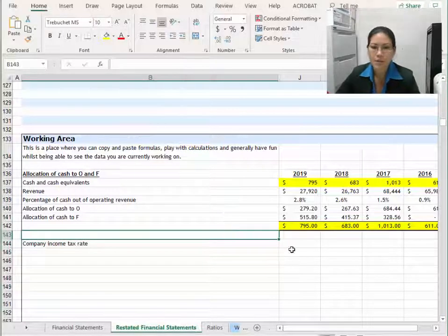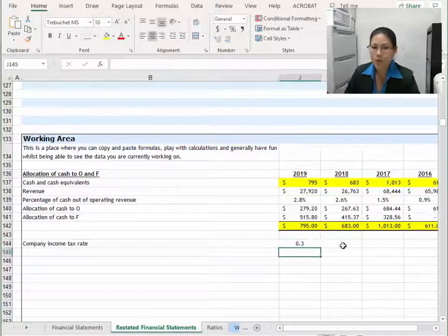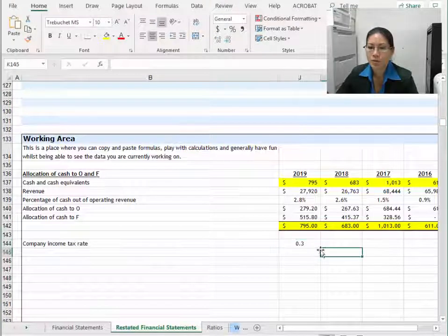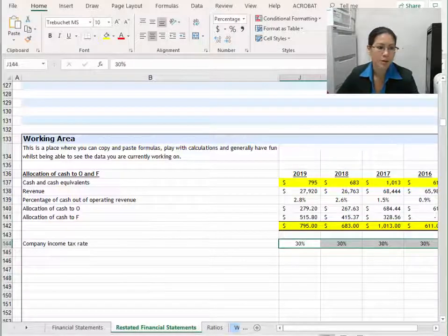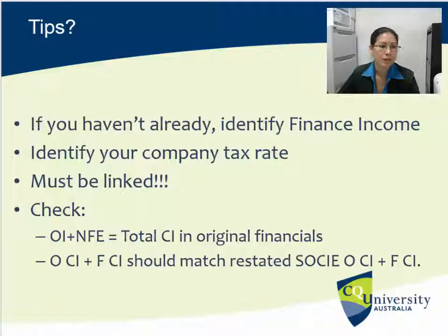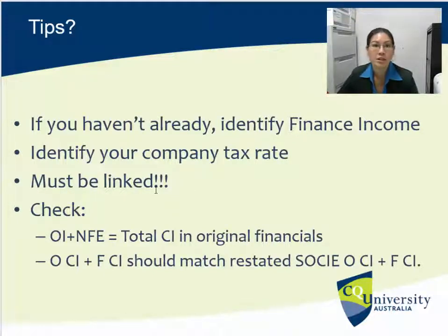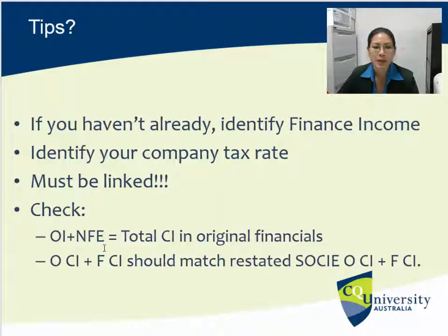For me, Wesfarmers is easy — Australia hasn't changed their corporate tax rate for a number of years. So I'm going to enter that into my spreadsheet right down in the working area for the allocation of cash to operating and financial, and I'm going to call it company income tax rate. I'll put 30% in and pull it across, so I know when I come to that section I've already entered it.